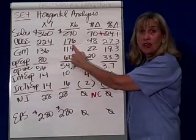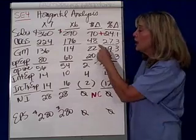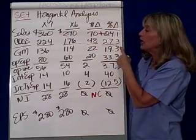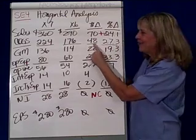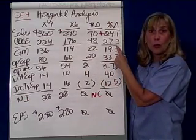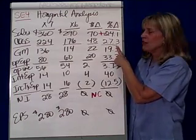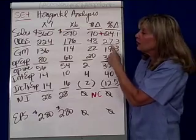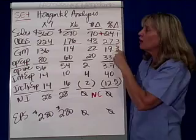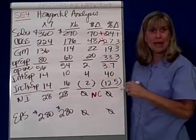Cost of goods sold started the year at $176,000 and ended the year at $224,000 — it increased $48,000. To find the percentage change: $48,000 divided by $176,000 shows they increased 27.3%. Is that a good thing or a bad thing? That's bad, because our costs increased at a greater percentage than our sales did. That's an unhappy face — a bad thing.